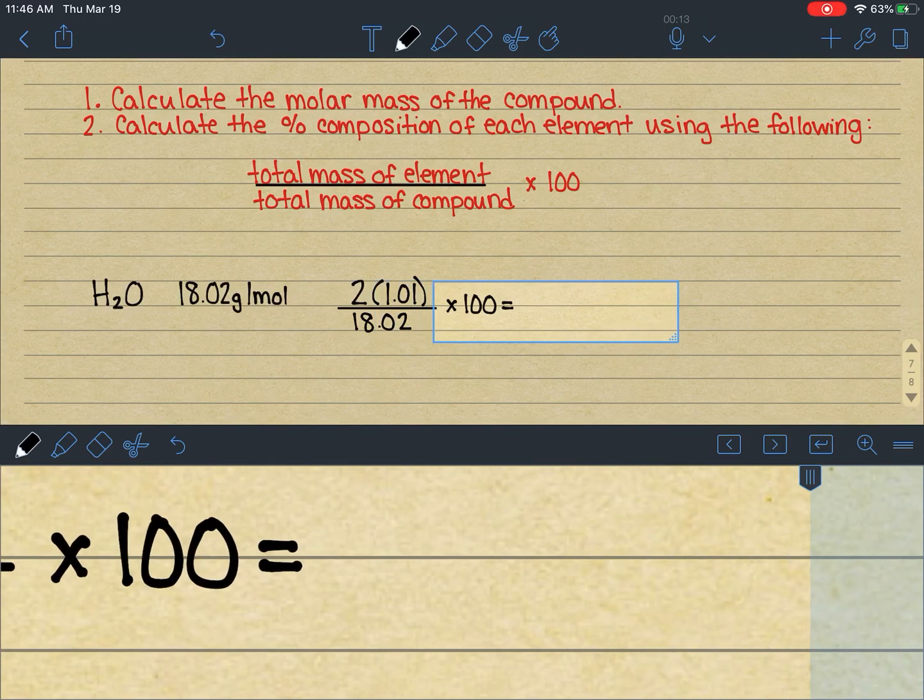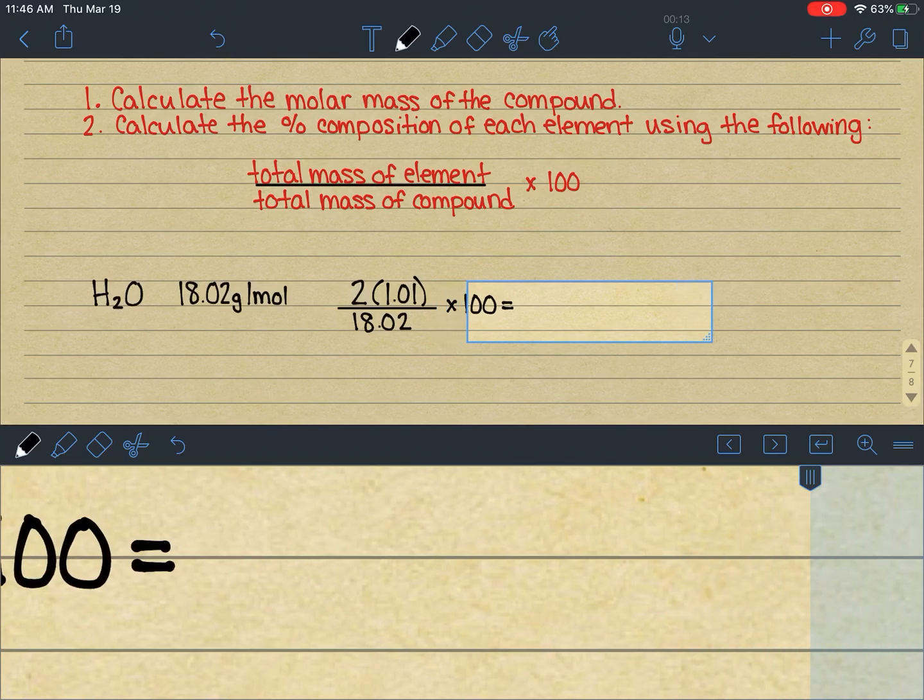I'm going to go ahead and plug that into my calculator really quickly. So 2.02 divided by 18.02 times 100, and I get a nice lengthy number. We're going to round to the hundredths place like we've been doing with everything. So 11.21%.